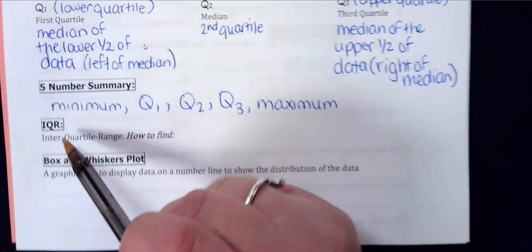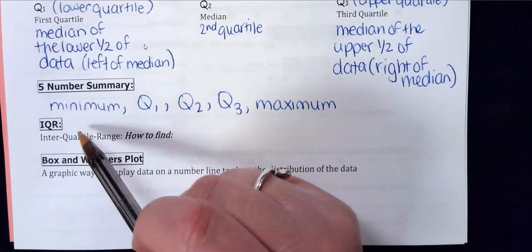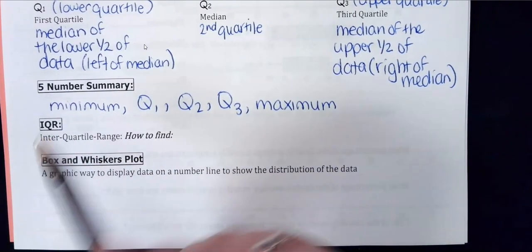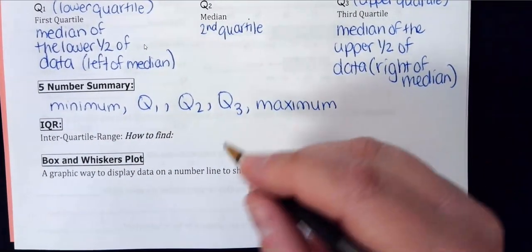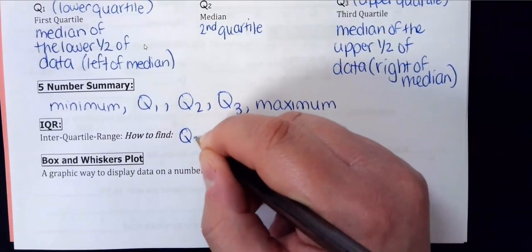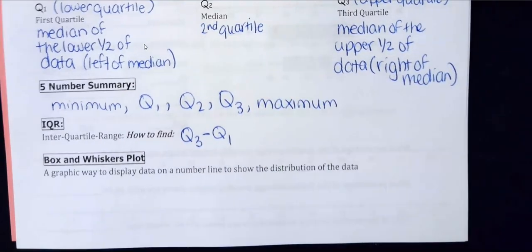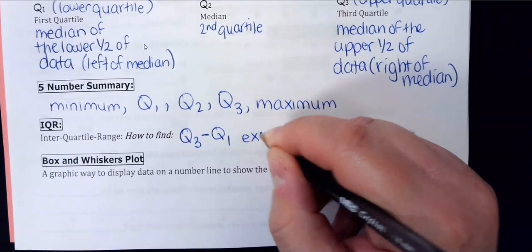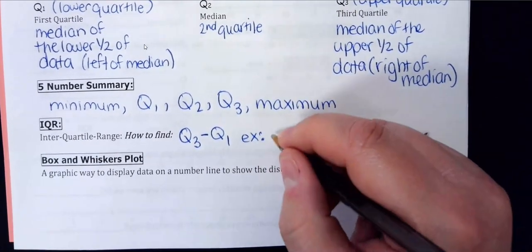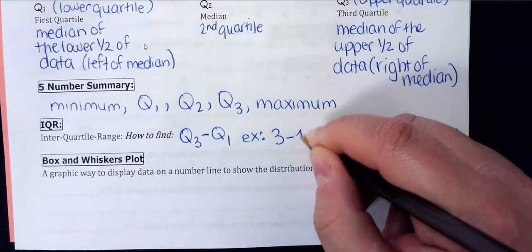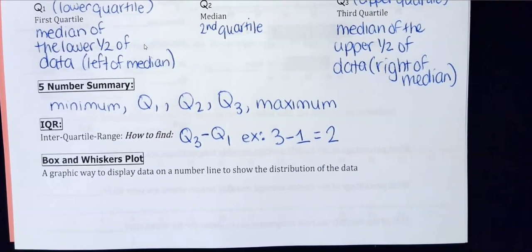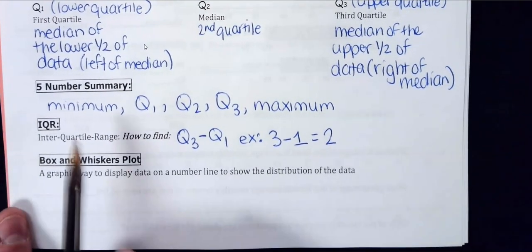The interquartile range, or IQR, is Q3 minus Q1. We're not going to use this much today — it's more important when finding outliers, which we'll do tomorrow. For the job offers data, our Q3 was three and Q1 was one, so the IQR is two.